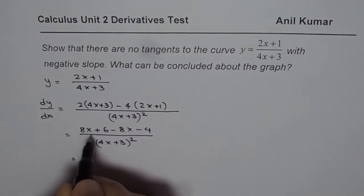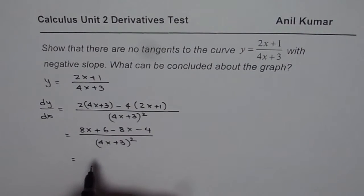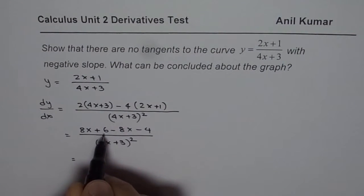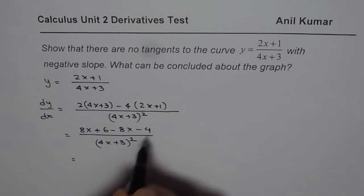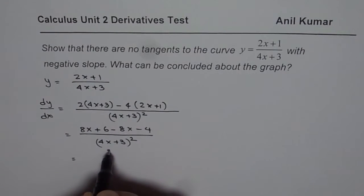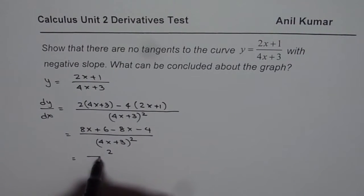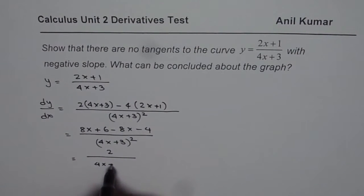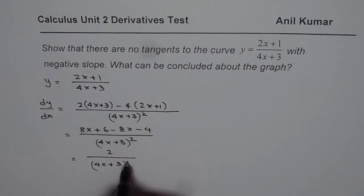Now in the numerator, 8x minus 8x is 0, and 6 minus 4 is 2. So we get 2 over 4x plus 3 whole squared.